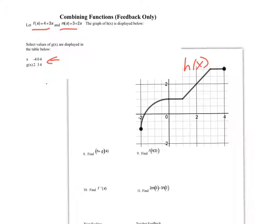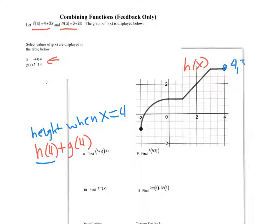h plus g of 4. I'm going to do up here so I have a little bit of room. h of 4 plus g of 4. h of 4 is talking about the height of my graph when x equals 4. So I'm going to go over to 4, and here's the point 4 comma 3. Therefore h of 4 is 3. g of 4 is talking about the output when x is 4. In this case that's going to be 4. 3 plus 4 is 7.